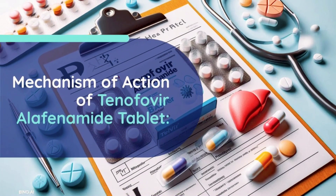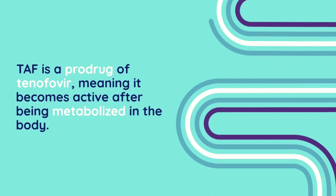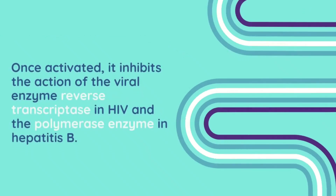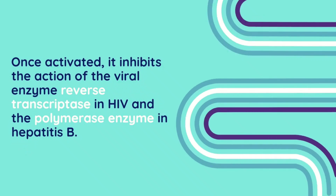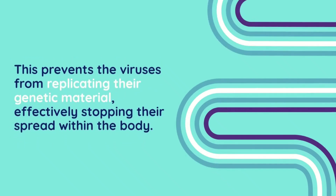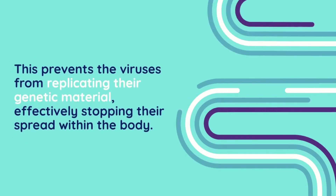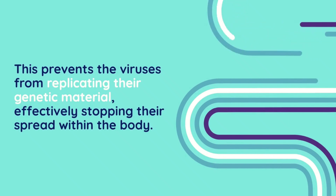Mechanism of action of tenofovir alafenamide tablet. TAF is a pro-drug of tenofovir, meaning it becomes active after being metabolized in the body. Once activated, it inhibits the action of the viral enzyme reverse transcriptase in HIV and the polymerase enzyme in hepatitis B. This prevents the viruses from replicating their genetic material, effectively stopping their spread within the body.